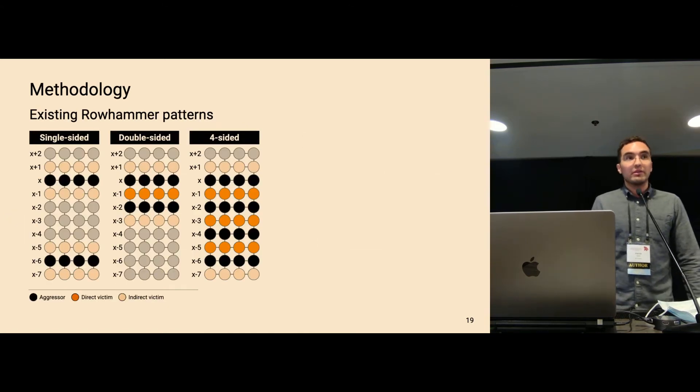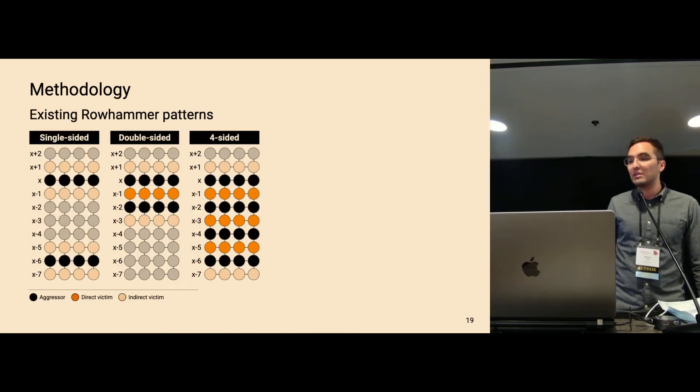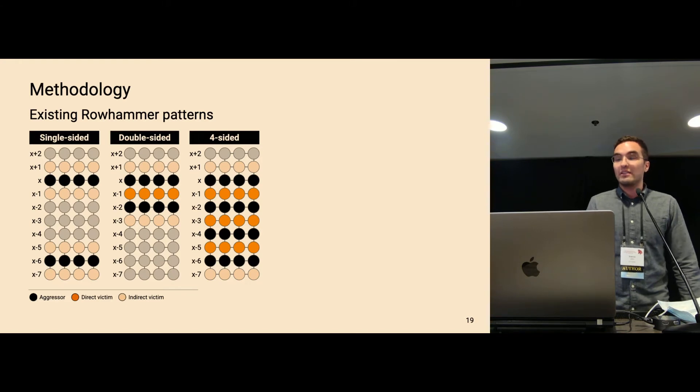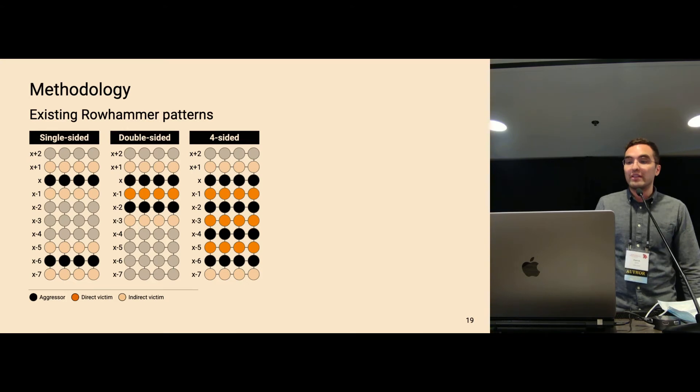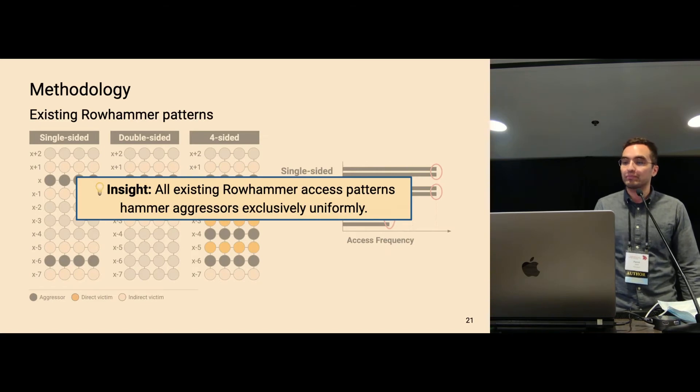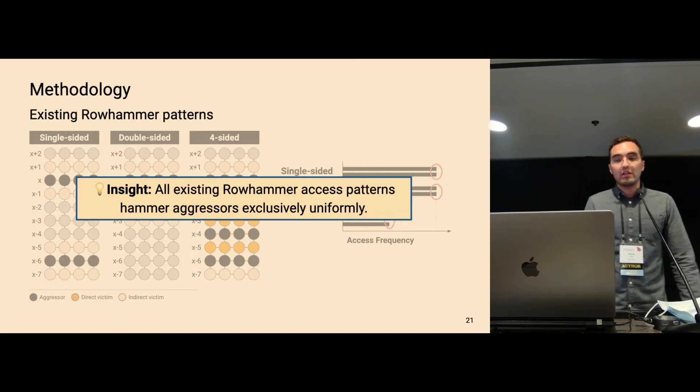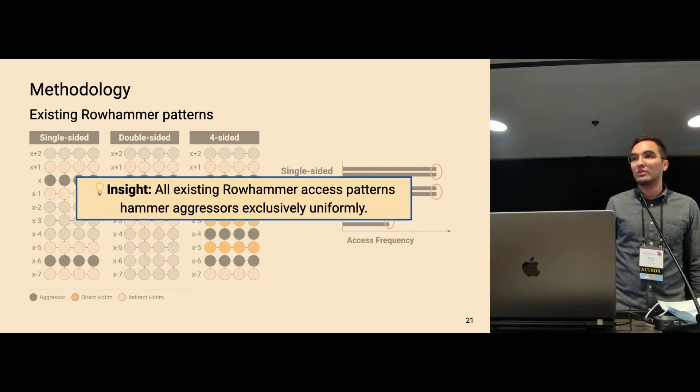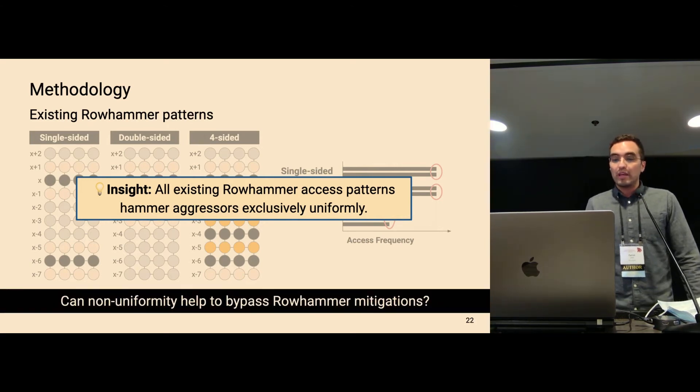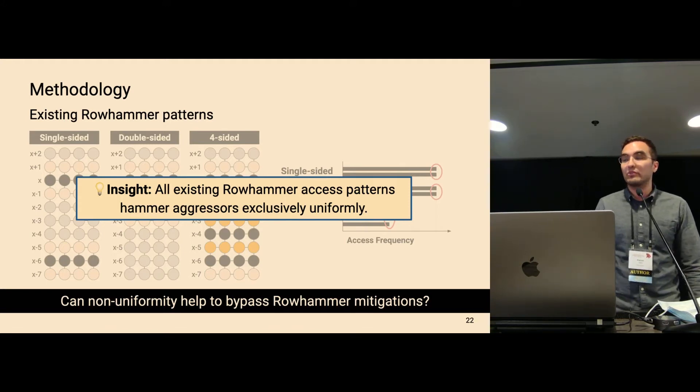So we started our investigation by looking at existing Rowhammer patterns. So here you can see three examples. You can see a single-sided pattern where we have two aggressors that are far apart, the double-sided pattern that I showed before, and the four-sided pattern, which is an example for an n-sided pattern with n equals 4. And we made the key observation that all of these existing patterns hammer the aggressors the same number of times over the same access frequency. And we asked ourselves if this is something that mitigations might have taken into account to facilitate tracking the aggressor rows. And for that, we wanted to know if non-uniformity can help to bypass Rowhammer mitigations.